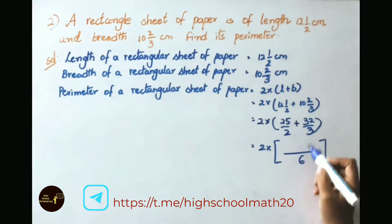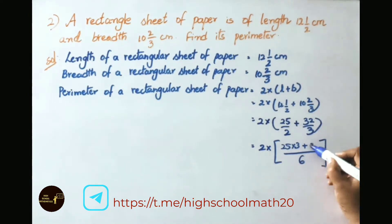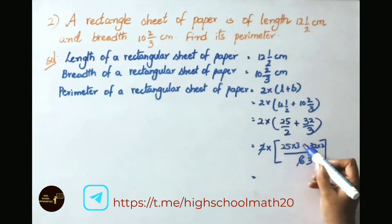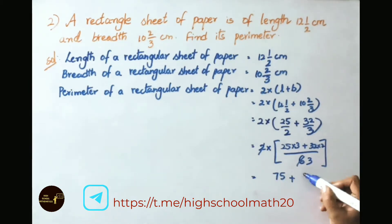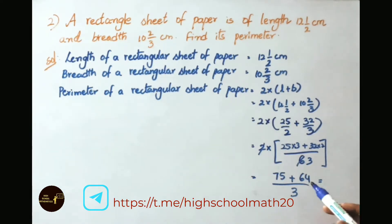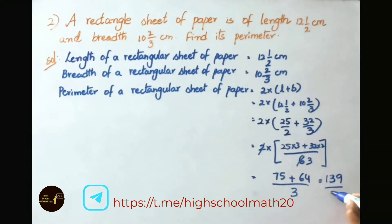Now let us do cross multiplication: 25 times 3 plus 32 times 2, all over 6. That equals 75 plus 64 by 6. When we add 75 and 64 we get 139. So we have 2 times 139 by 6.